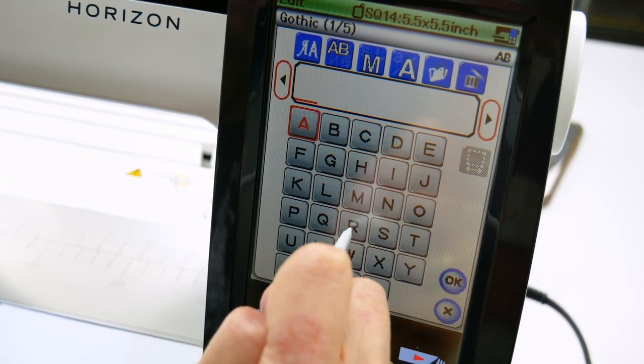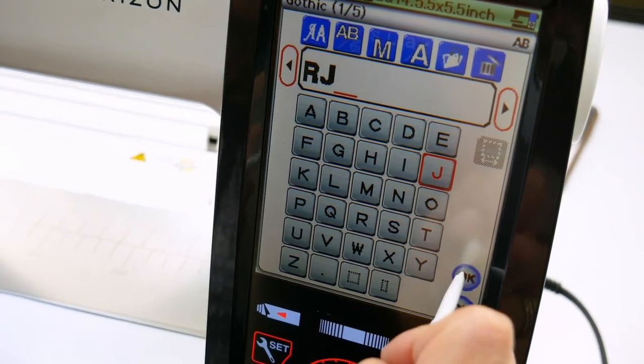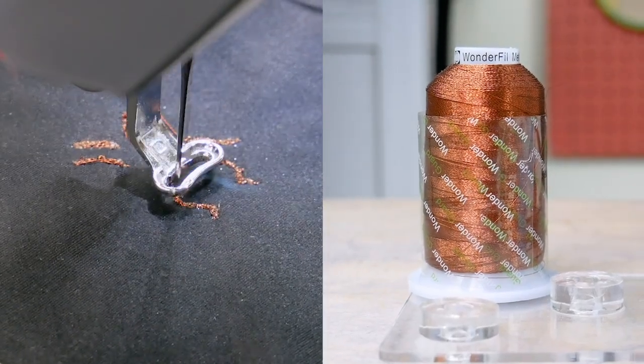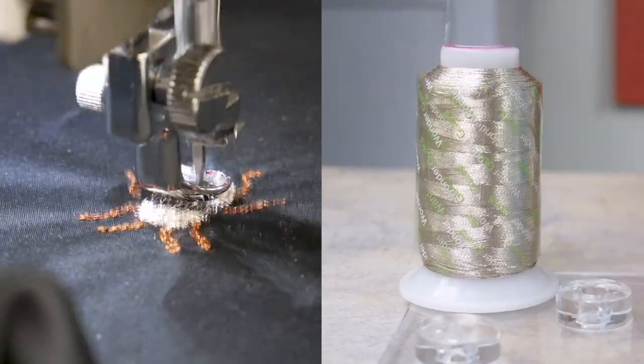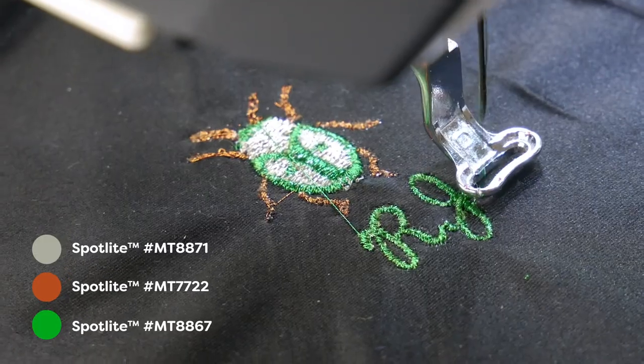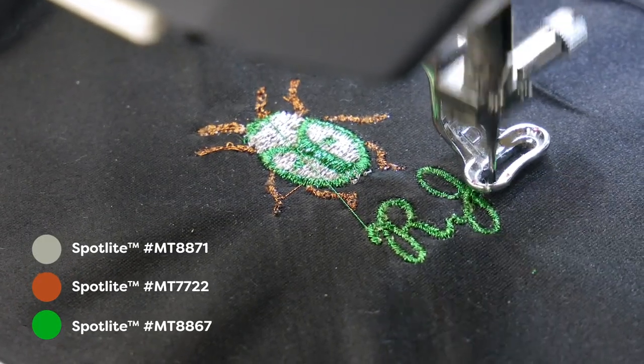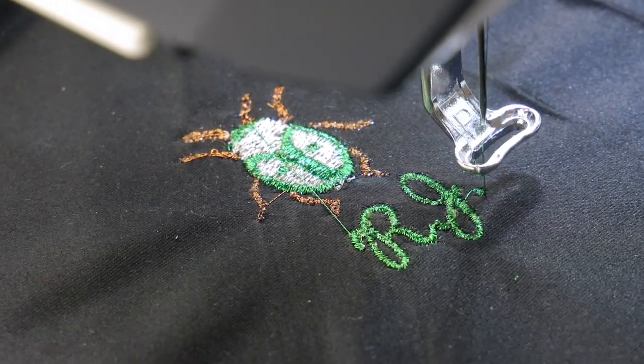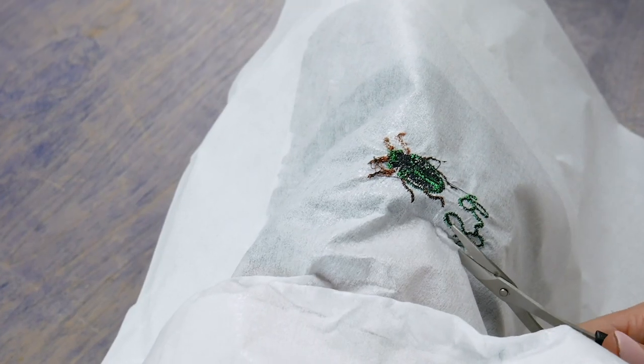Changing colors as indicated, we've included the color numbers of Spotlight we use for our designs. When your stitch-out is complete, remove the stabilizer from the hoop and trim away on the underside of the tie.